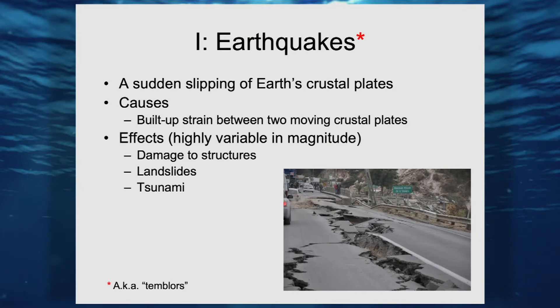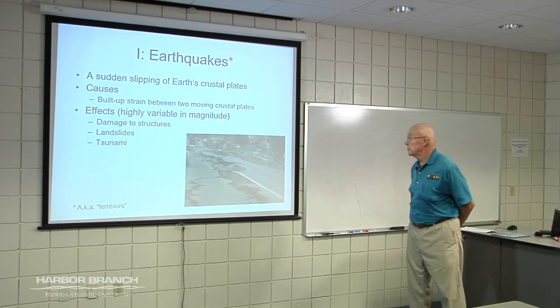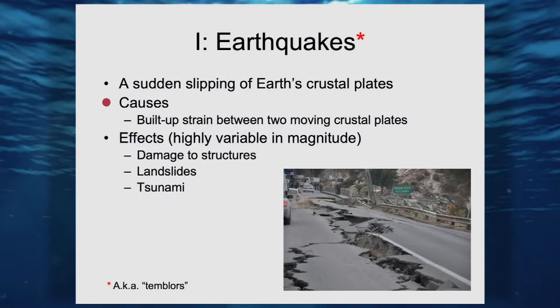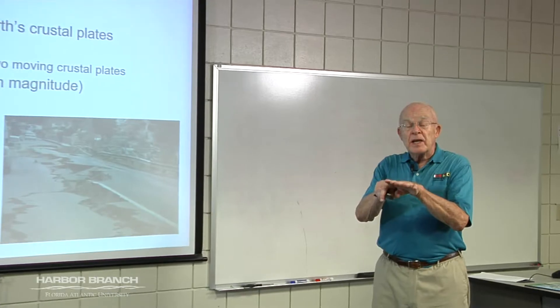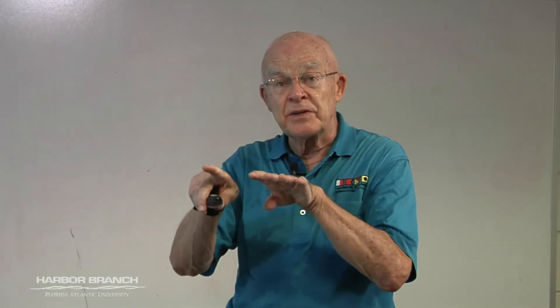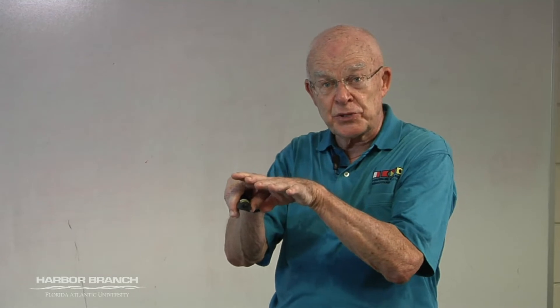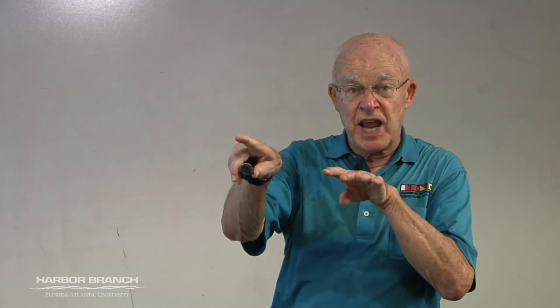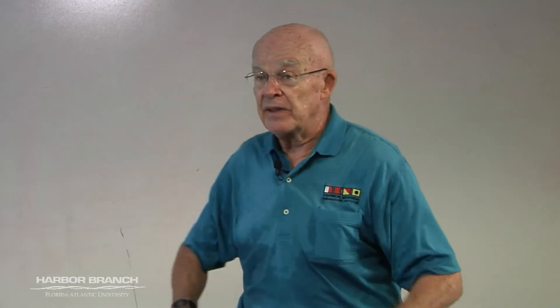Earthquakes are a sudden slipping of Earth's crustal plates. They are caused when two adjacent crustal plates slip relative to each other. Commonly, two crustal plates will be moving in different directions and there will be a strain or stress that is built up. And when finally the rocks give way, the crust gives way, there's a snapping response — and that is the earthquake.